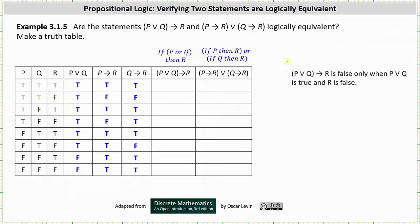If p or q then r is false only when p or q is true and r is false; otherwise the implication is true. Notice p or q is true and r is false in row two, row four, and row six — every other row the implication is true. The column for if p or q then r is: true, false, true, false, true, false, true, true.